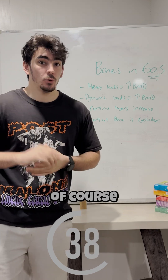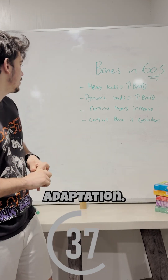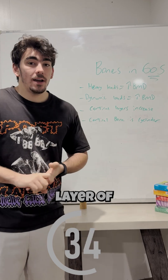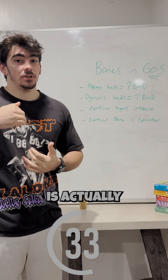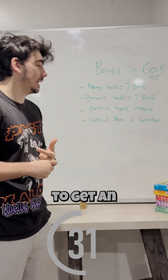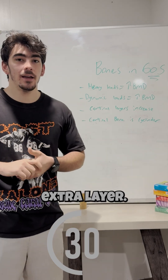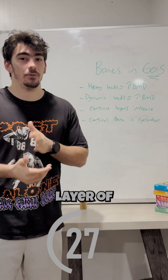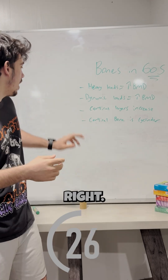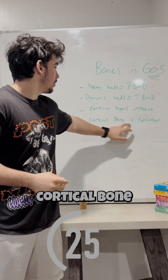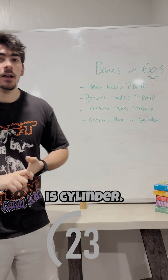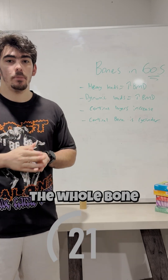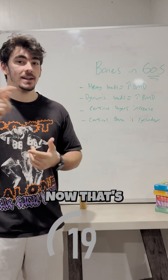So that is, of course, a good adaptation. What's going to happen is the cortical layer of the bone is actually going to increase — we're going to get an extra layer. The cortical layer is the very outside layer of the bone, and this cortical bone is cylinder-shaped, so it actually encompasses the whole bone in a cylinder shape.